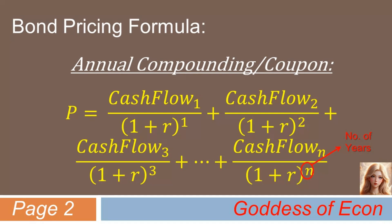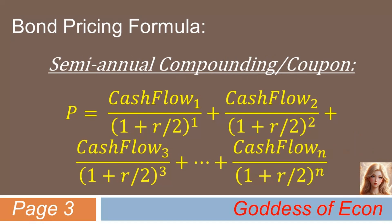Now, if we assume semi-annual compounding and semi-annual coupon instead, the formula will change slightly to the following. Please note that r, the ytm, is almost always expressed on a per annum basis. Therefore, the annual rate is divided by 2 in the denominator. Also note that n, here in this semi-annual case, represents the total number of semi-annual periods up to maturity.